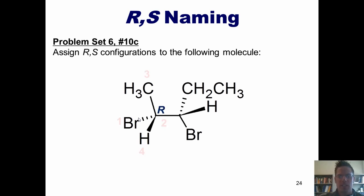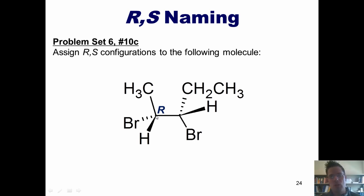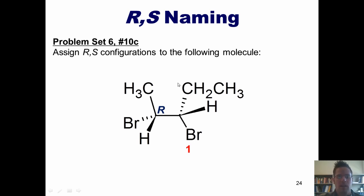So we've determined the stereoconfiguration of the stereocenter at the left. Let's now do the same thing for the stereocenter at the right. This carbon is bonded to a carbon, a carbon, a bromine, and a hydrogen. The bromine has highest priority. Now the two carbons tie, so I have to go out to break the tie.